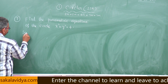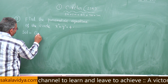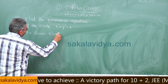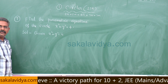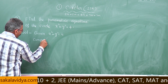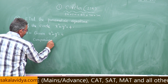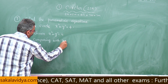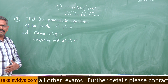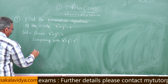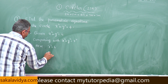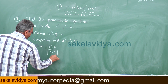Given x squared plus y squared equals 4, comparing with x squared plus y squared equals r squared, we get r squared equals 4, therefore r equals 2. So the radius is 2.